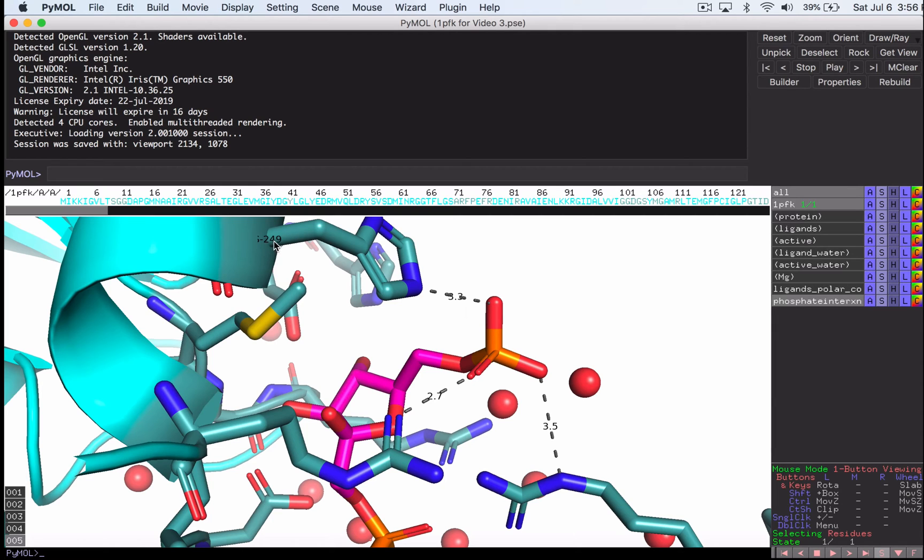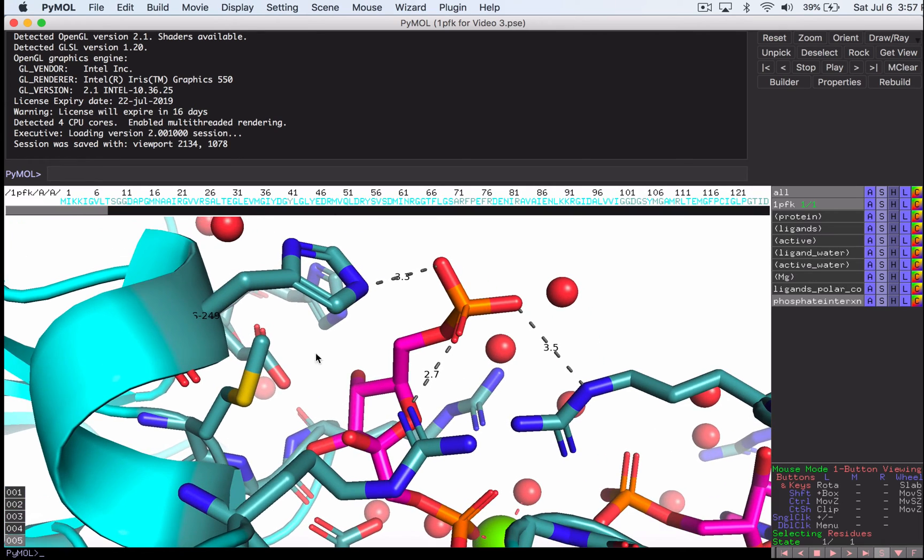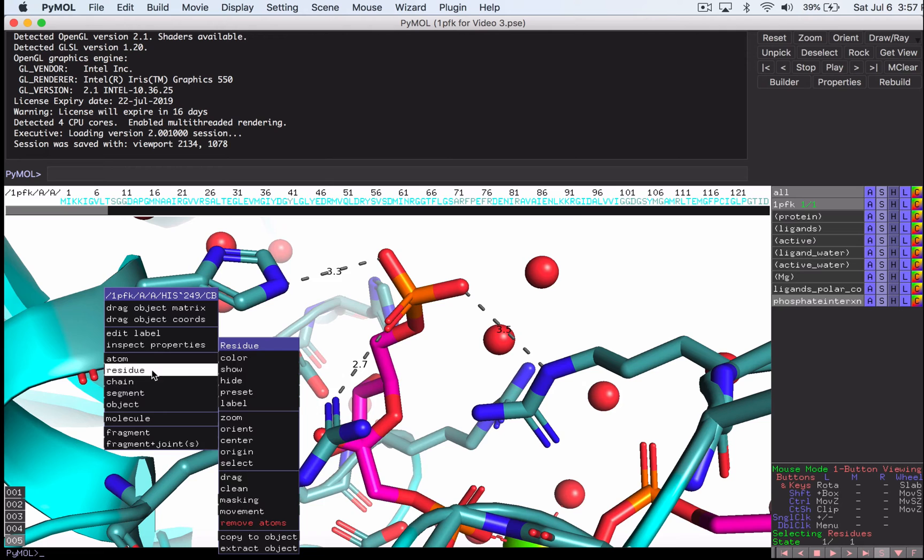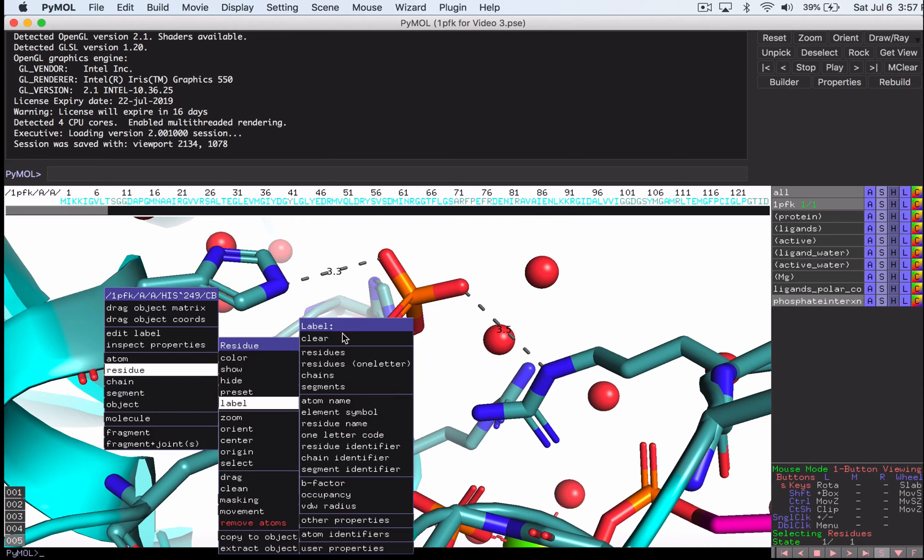So some people, actually it's going to be a capital, if we can get it into view here a little bit better, it's a capital H-I-S dash. So some people prefer to have capital H, lowercase is, maybe a space here, maybe a dash here. There's all different ways that people prefer you to show this. And so I'm going to show you how we can put on any custom label that we want. So again, let's right click on this residue, Residue, Label, and clear it.